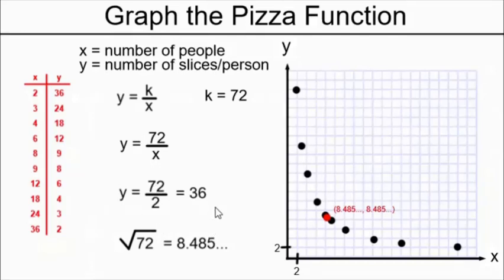But doing this little exercise gives us some hints as to how we can predict the shape of a pizza function that might have a different value than 72 as its k. And a trick we could use for finding an important point where we square root the k. Graphing the pizza function is a useful exercise in understanding how the pizza function works.